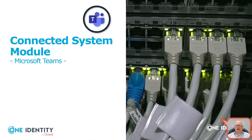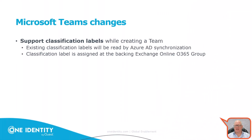Now for Microsoft Teams extensions: classification labels are now included, as seen in some other objects. They are available — you can read them from Azure Active Directory and assign them at the Exchange Online 365 Group.